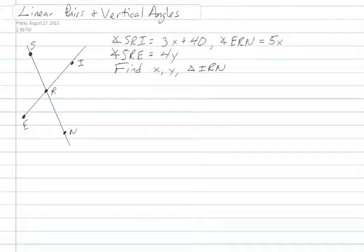In this problem, we're going to use the properties of linear pairs and vertical angles to solve for variables and then for an angle measure.